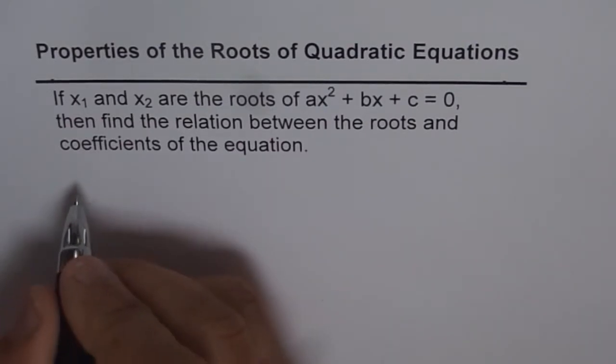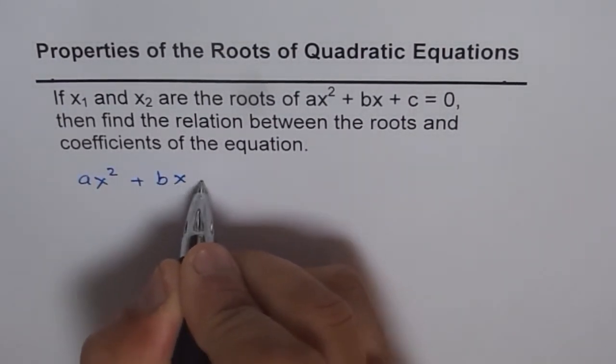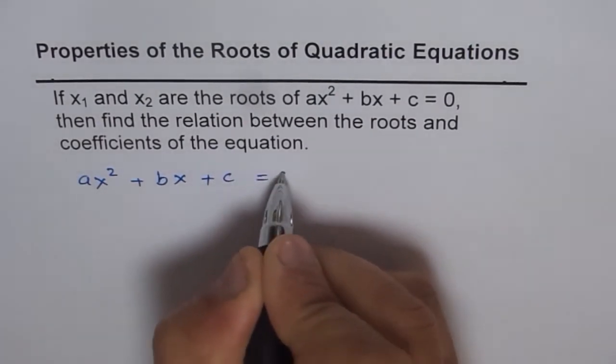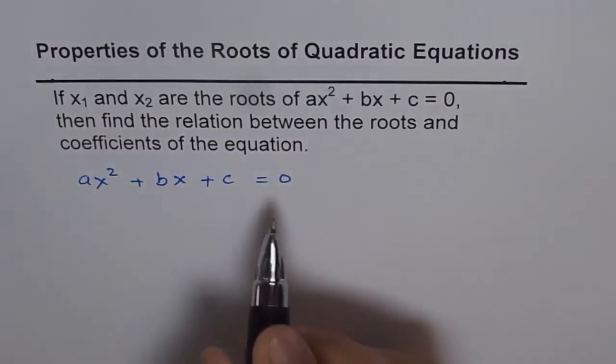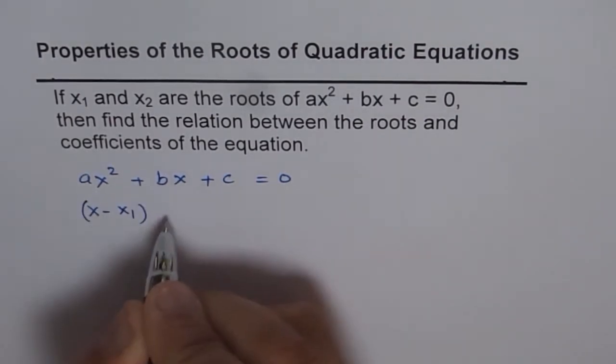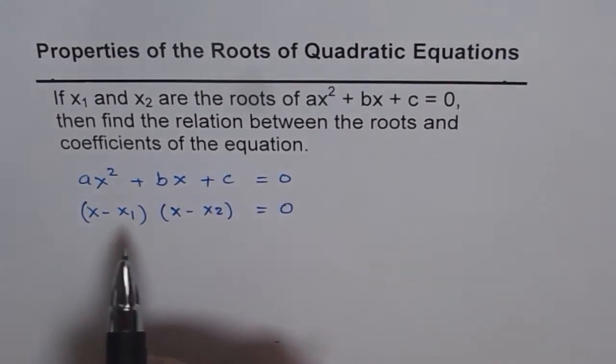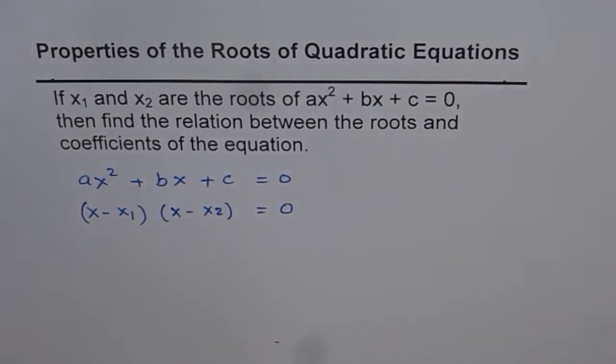That is to say that the given equation ax squared plus bx plus c equals 0 can also be written as (x minus x1) times (x minus x2) equals 0 if x1 and x2 are roots of the equation. That is what it means.